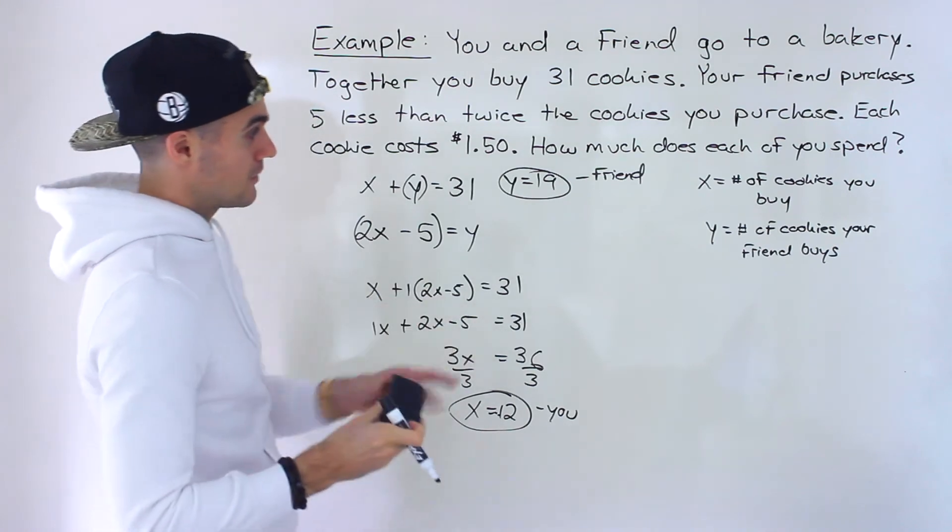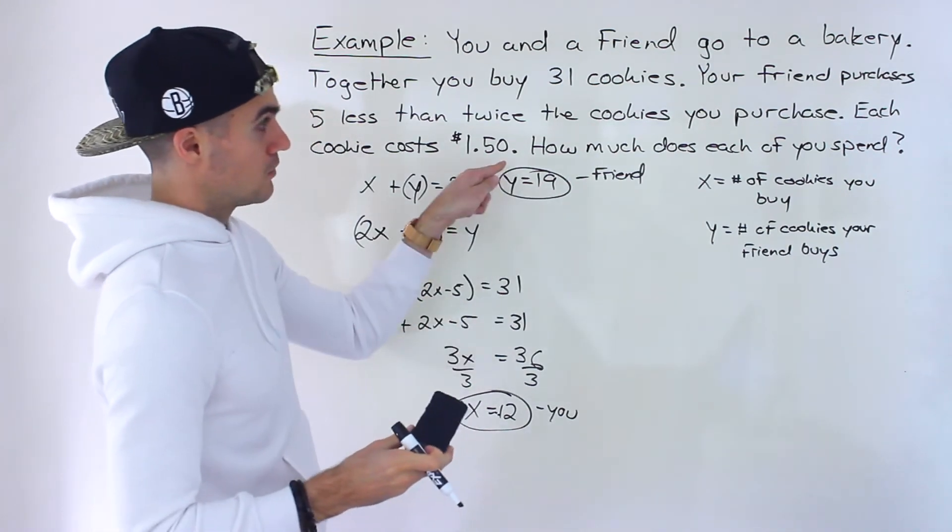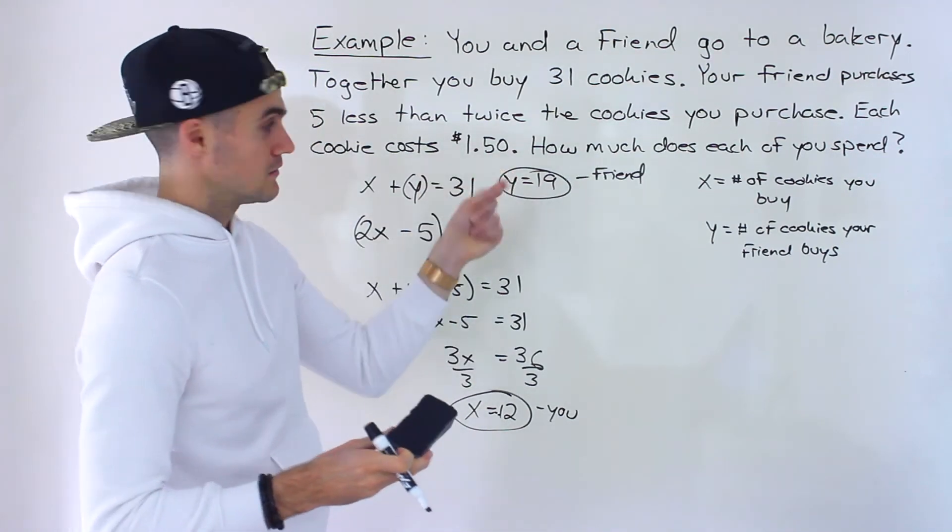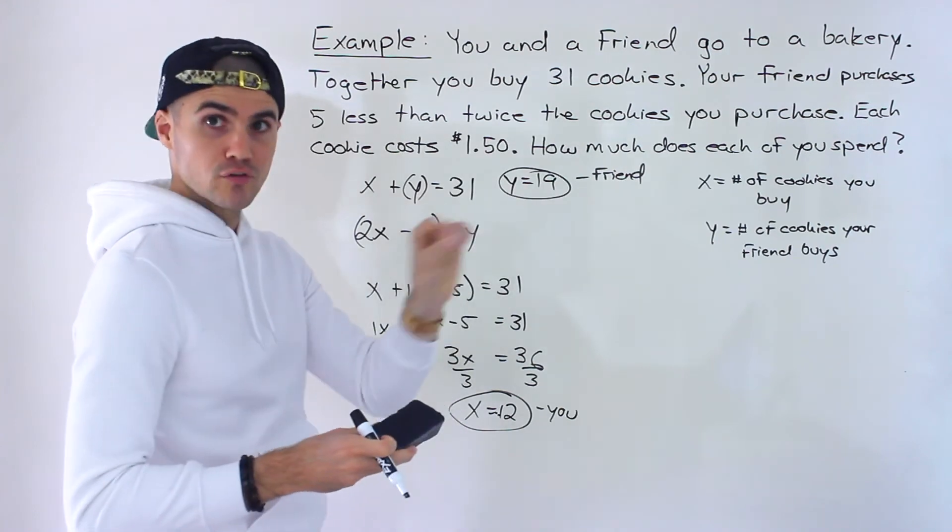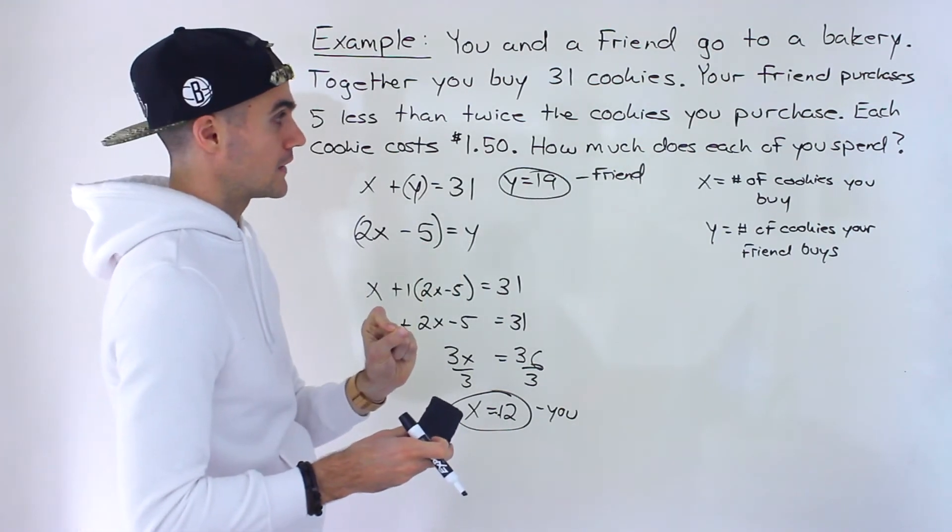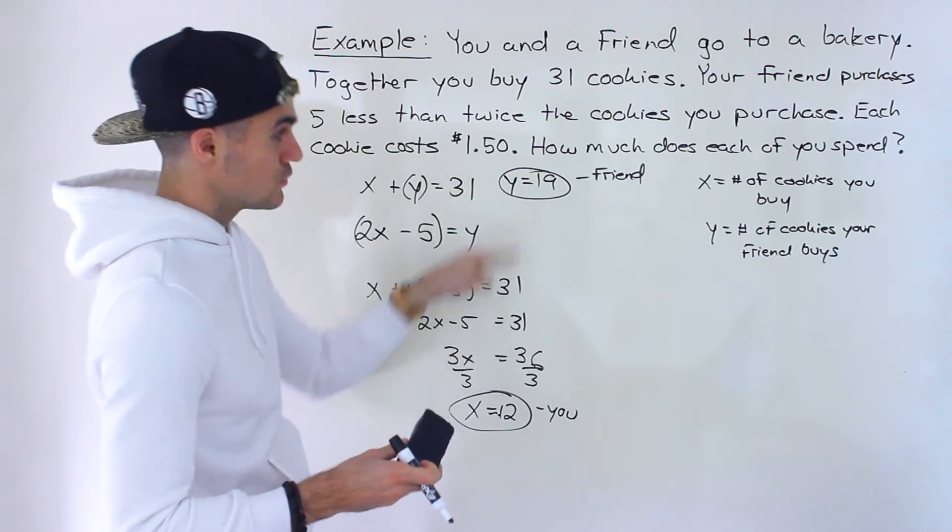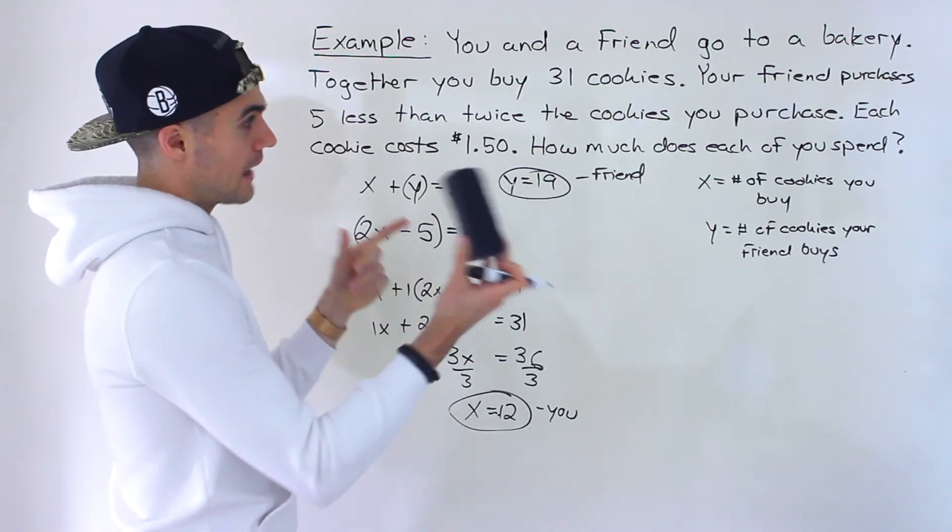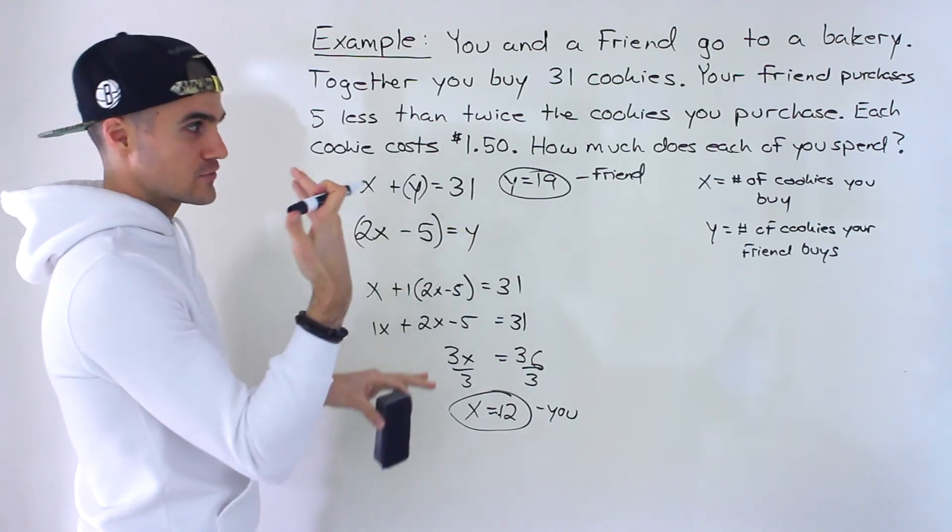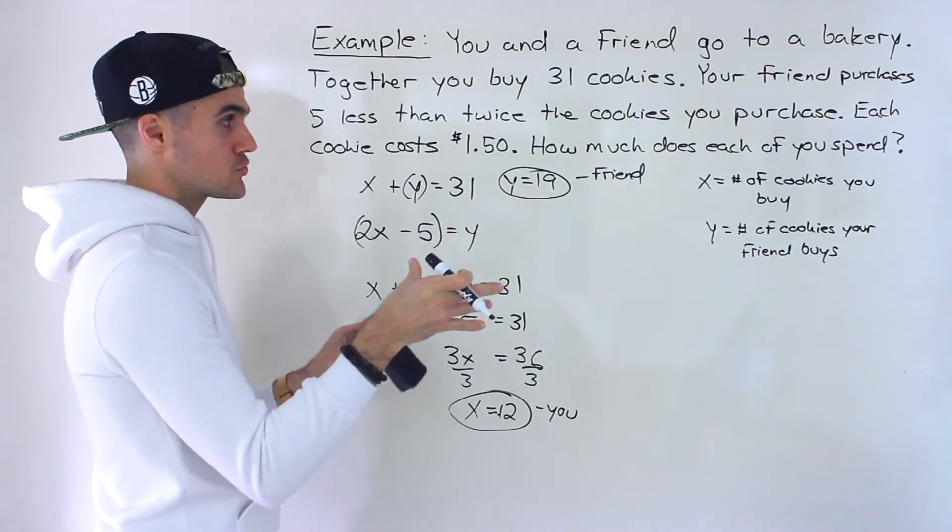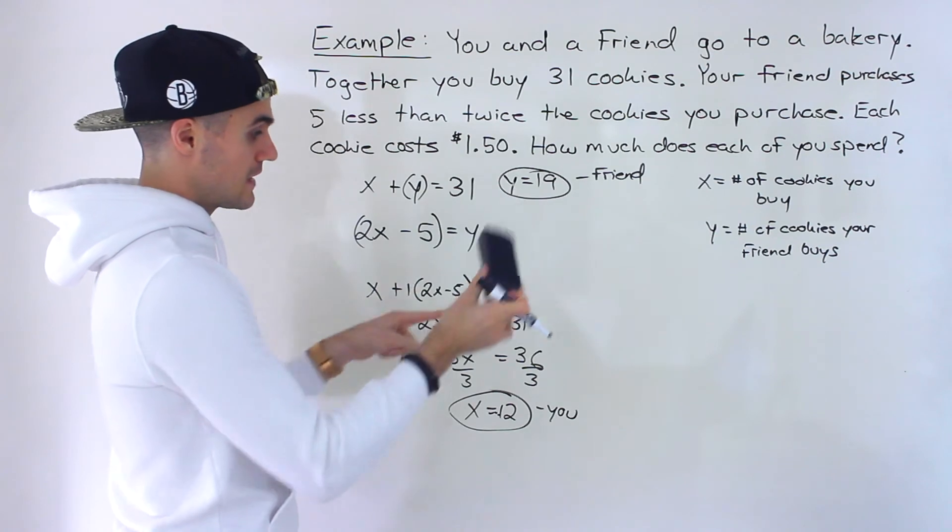Okay, but remember, this is the amount over here. This is not the amount that you spend. And this is the quantity, the number of cookies that each of you are buying. So you got to read these questions super carefully. Sometimes they'll be asking you for the quantity. But sometimes they'll add extra information like this, where you have to solve for something else. And on a multiple choice test, how much does each of you spend?